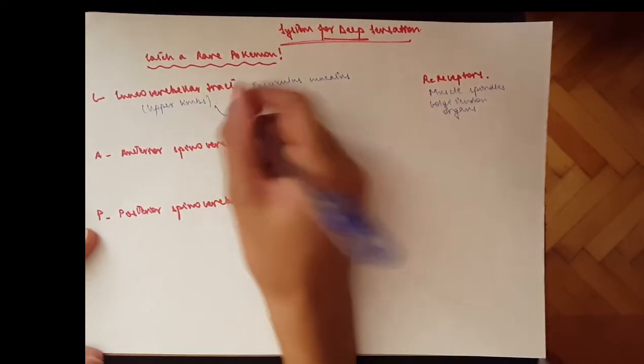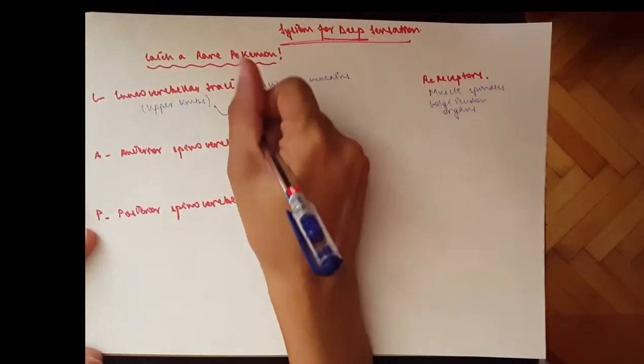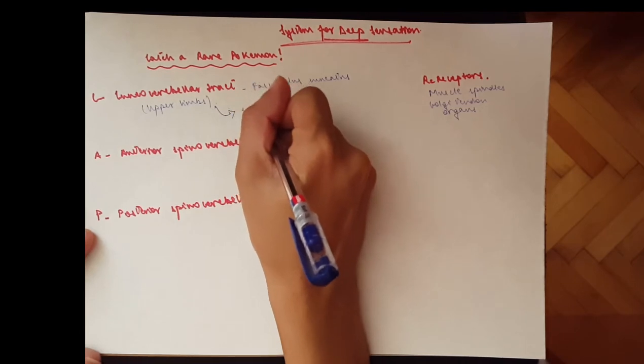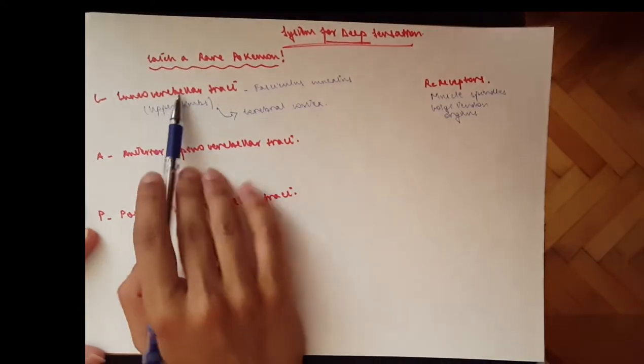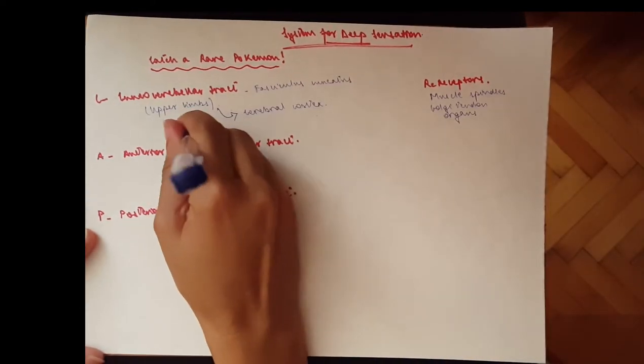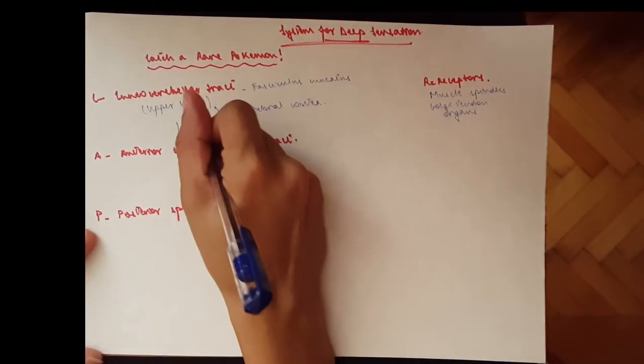I'm going to write the upper limbs. And from here it goes to the cerebral cortex from the cerebellum. And it lands at the cerebellum at the level of the inferior cerebellar peduncle.